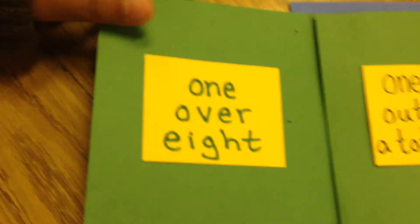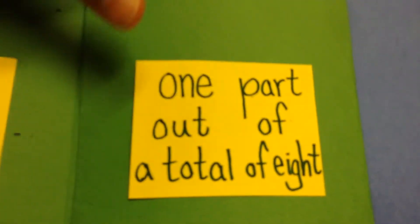There are one over eight, one part out of a total of eight, one out of eight, and one eighth.